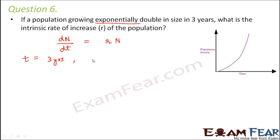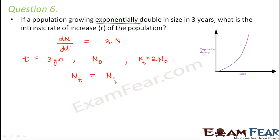Initially, the size of the population, let's say, was N₀. So after 3 years, the size of the population has become 2N₀. That means N after a time period t has become 2N₀. From this, the exponential form of the equation we derived was Nt = N₀ × e^(rt). We will make use of this equation here.